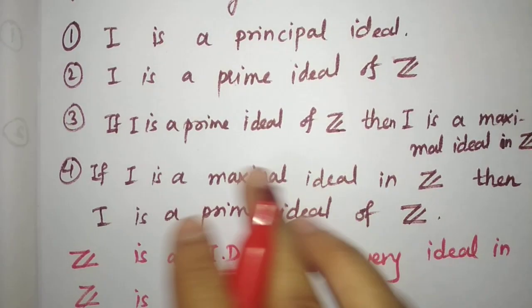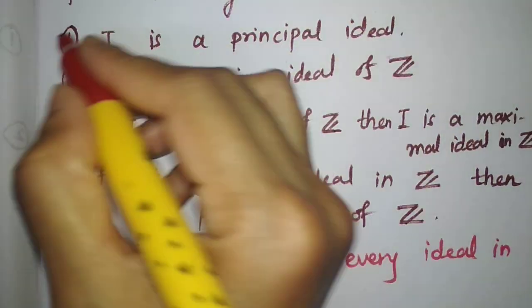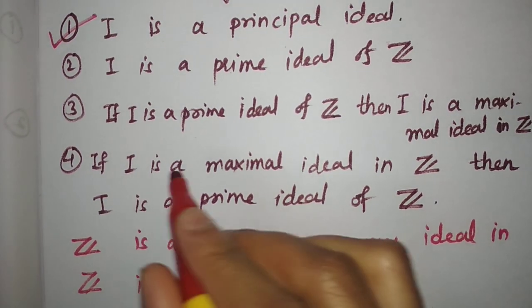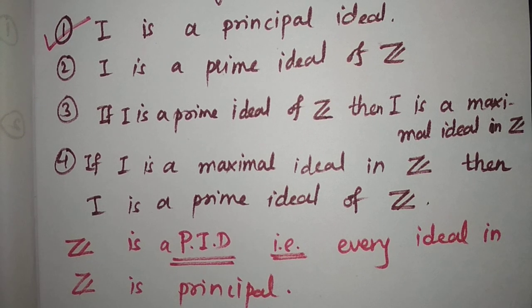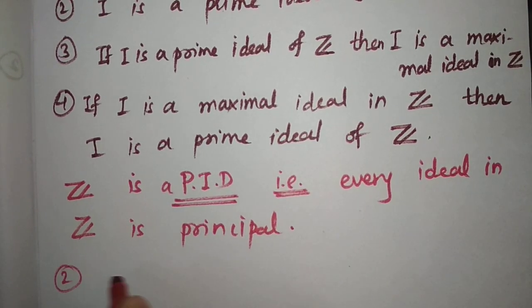So this statement is correct because I is any ideal of Z, so I is a principal ideal because Z is a PID. Now, 'I is a prime ideal of Z' - it is not necessarily true. Let us take the second option.